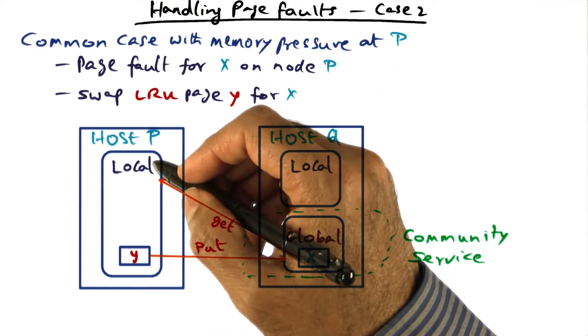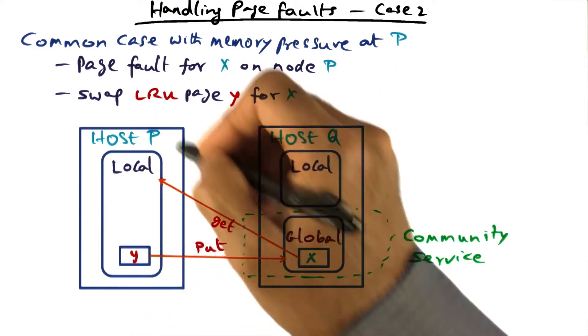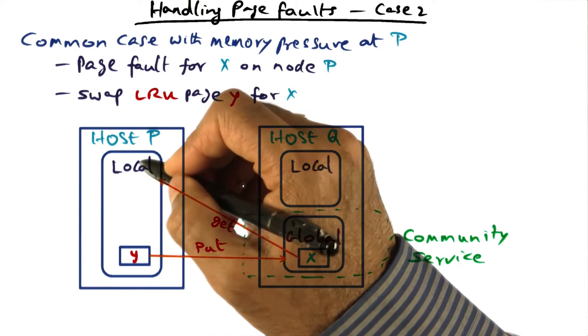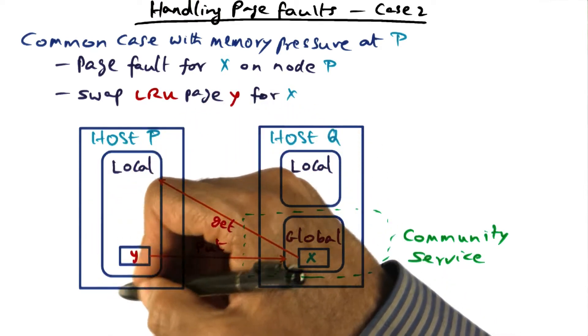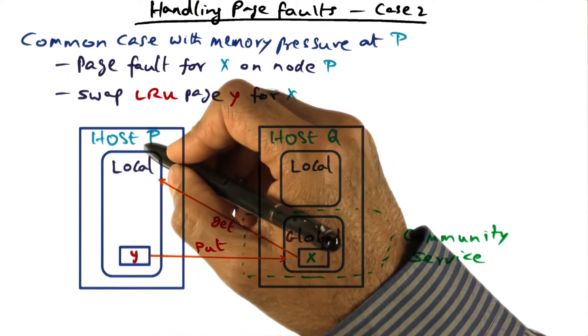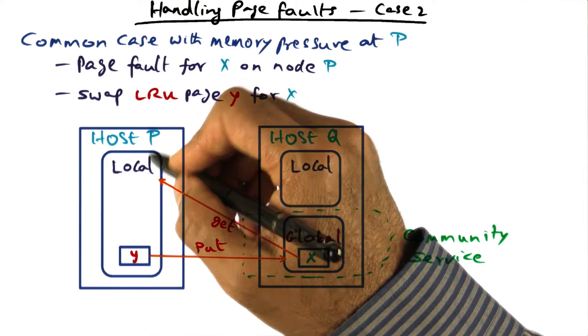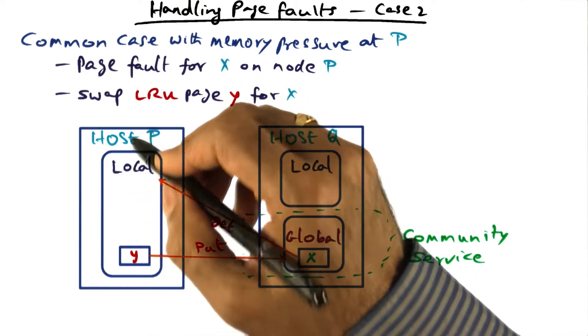In this case, there's so much memory pressure that all of the physical memory available at P is being consumed by the working set for hosting all the applications running on host P. There's no community service happening on host P.